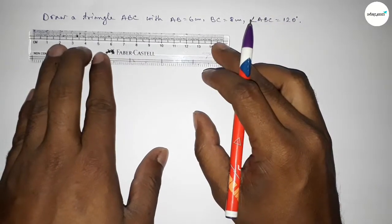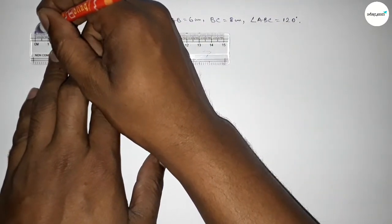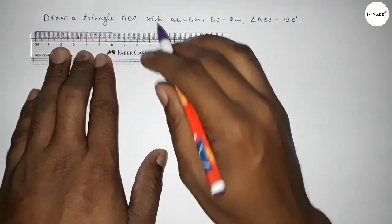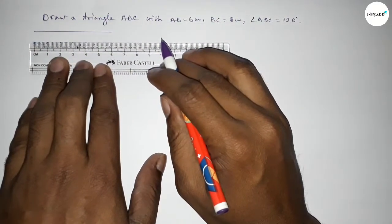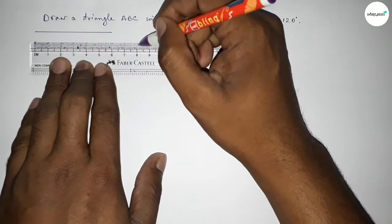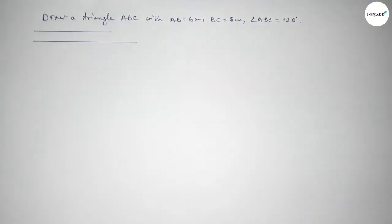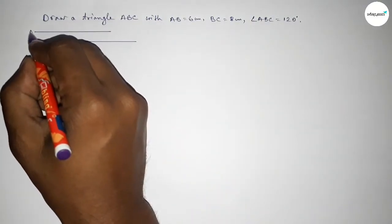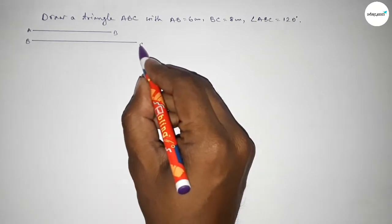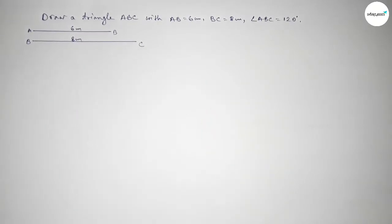First of all, drawing here two lines — 6 centimeter and 8 centimeters. Drawing a line of length 6 centimeter, so this is 6 centimeter, and drawing another line of length 8 centimeter, so this is 8 centimeter. This one is AB and this one is BC.